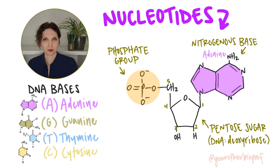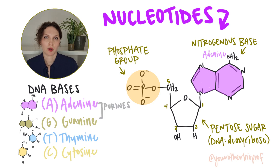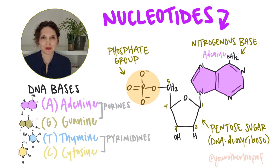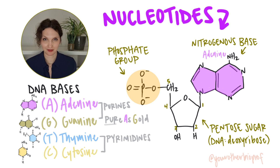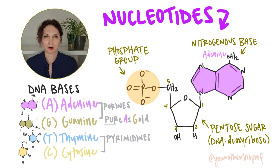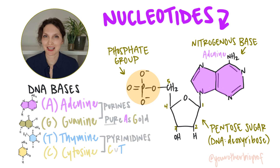Adenine and guanine, the ones with the double ring structure, are referred to as purines, while cytosine and thymine, the single rings, are referred to as pyrimidines. If you need to remember which is which: purines are 'pure as gold,' meaning the purines are A and G. For the pyrimidines, think pyramids — think sharp, they can cut you — CUT — that's cytosine and thymine.